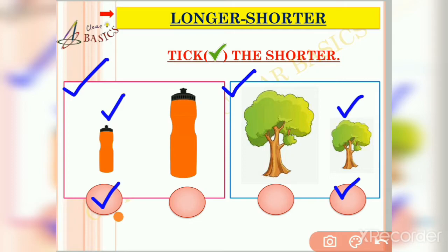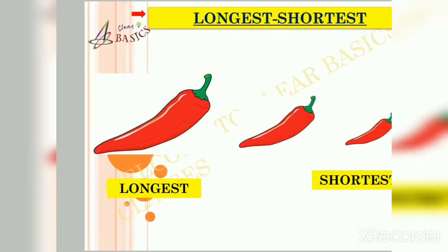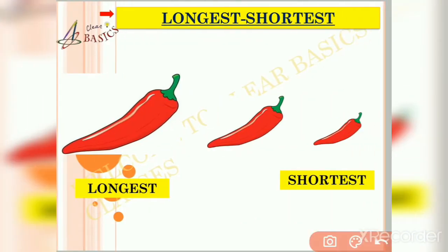In the previous slide we discussed the concepts of longer and shorter, which are generally used to compare between two objects but not more than that. But in this slide we can compare more than two objects. Longest and shortest are generally used to compare more than two objects.